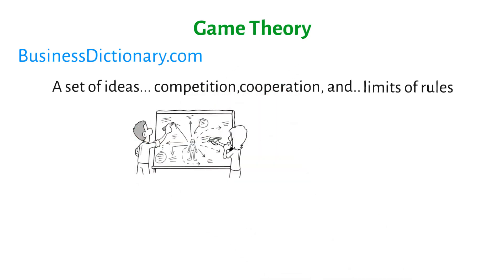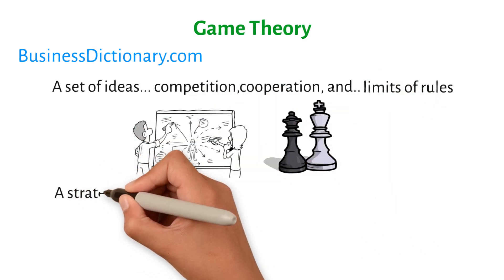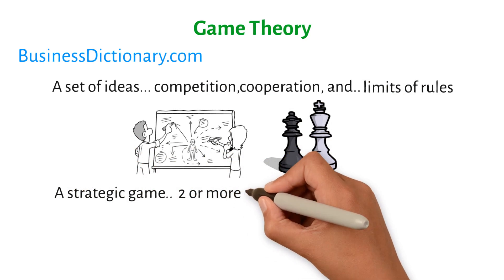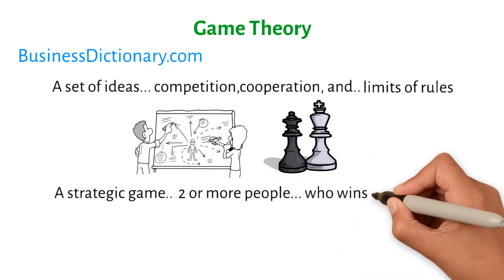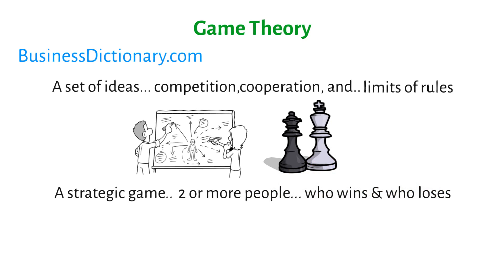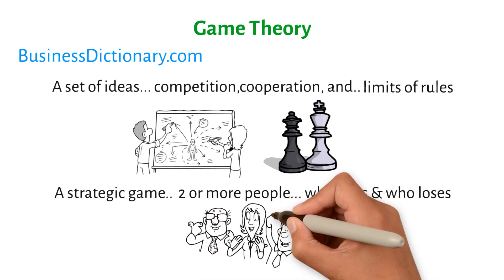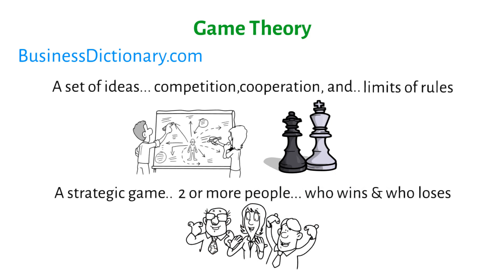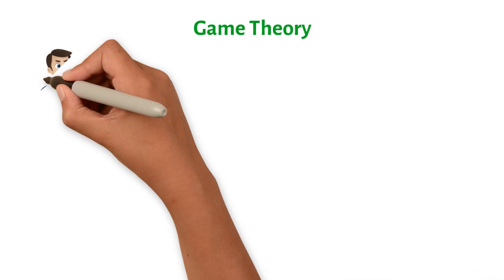Game theory doesn't use games of chance, only games of strategy, like chess. A strategic game is one in which two or more people have to make choices that affect who wins and who loses, depending on what the other players do or don't do. The end result of the game is decided by how each player chooses to play.